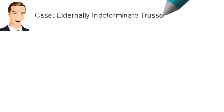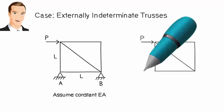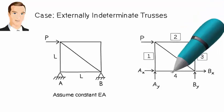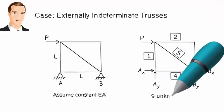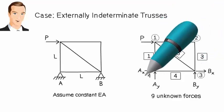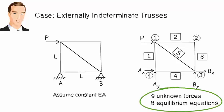Here is an externally indeterminate truss. How do we know it's indeterminate? The truss has 5 member forces and 4 support reactions, for a total of 9 unknown forces. Yet we can write only 8 joint equilibrium equations — 2 equations per joint. Since the number of unknown forces is greater than the number of joint equilibrium equations, the truss is considered indeterminate. Since the difference between these two numbers is 1, the degree of indeterminacy of the truss is also 1.